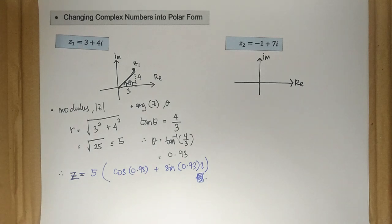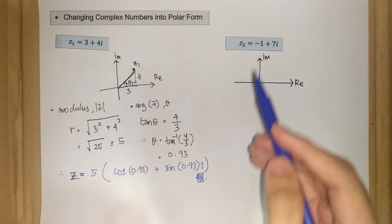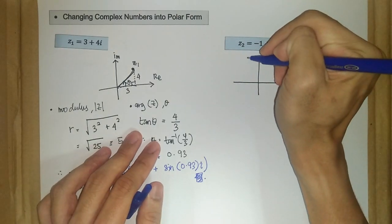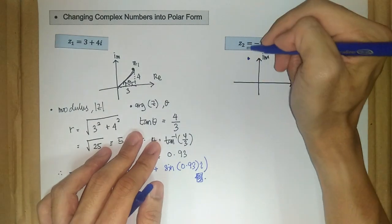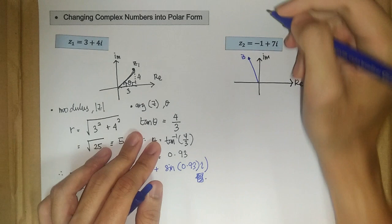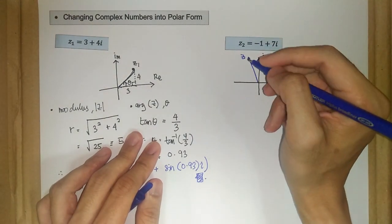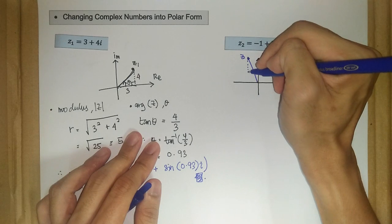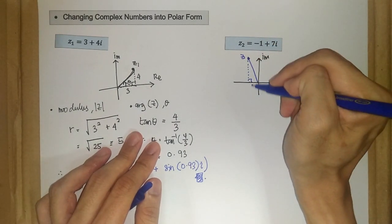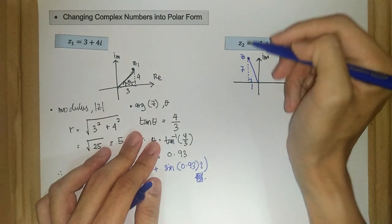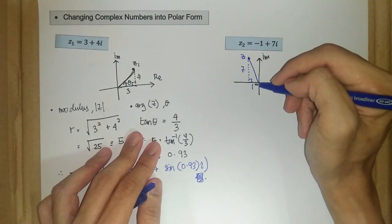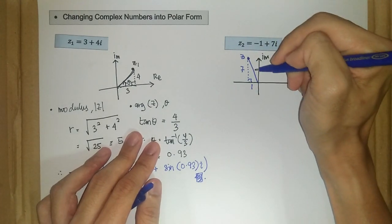We have negative one and seven, so somewhere here. So this is our z2. So now, our triangle here should be in this second quadrant. We have negative one unit to the left and seven units up in the vertical axis. So this is our modulus r.